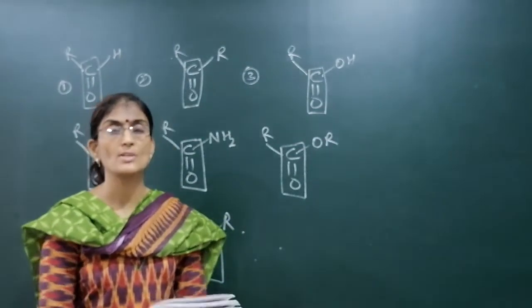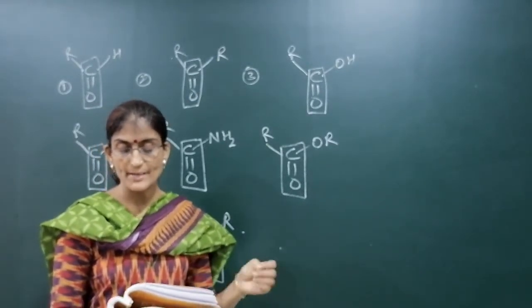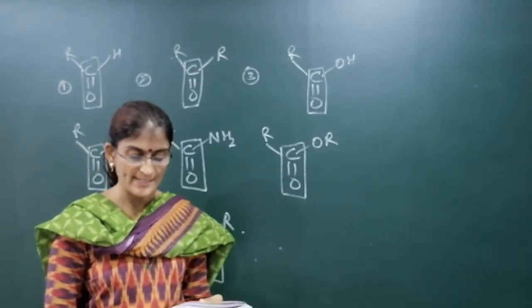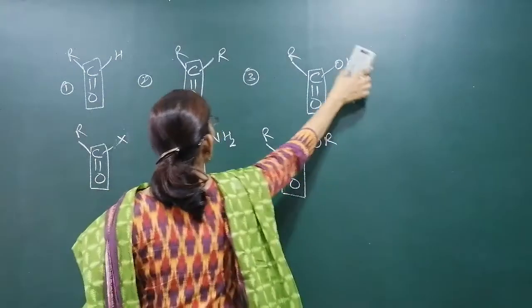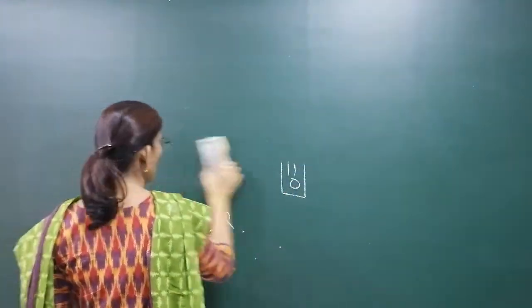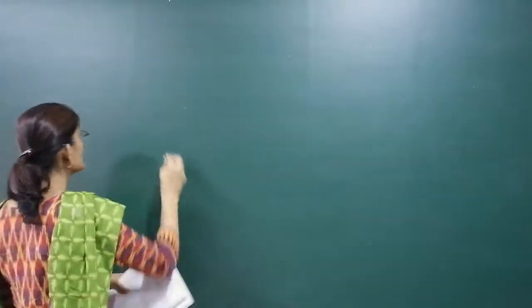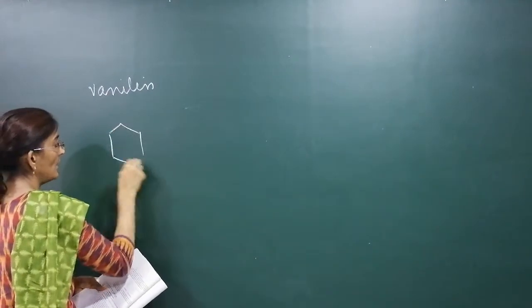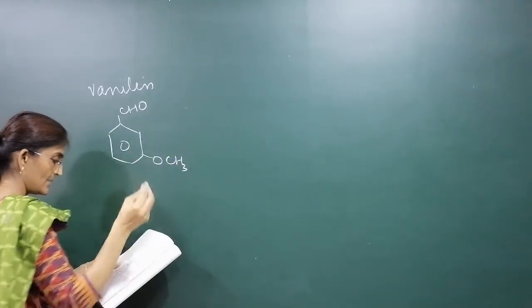Why are we studying these compounds? Because aldehydes, ketones, and carboxylic acids play a widespread role in plants and the animal kingdom. Some important examples: first is vanillin — the compound found in vanilla beans that gives vanilla its characteristic smell. It is an aldehyde compound with the structure containing –CHO, –OCH₃, and –OH groups.